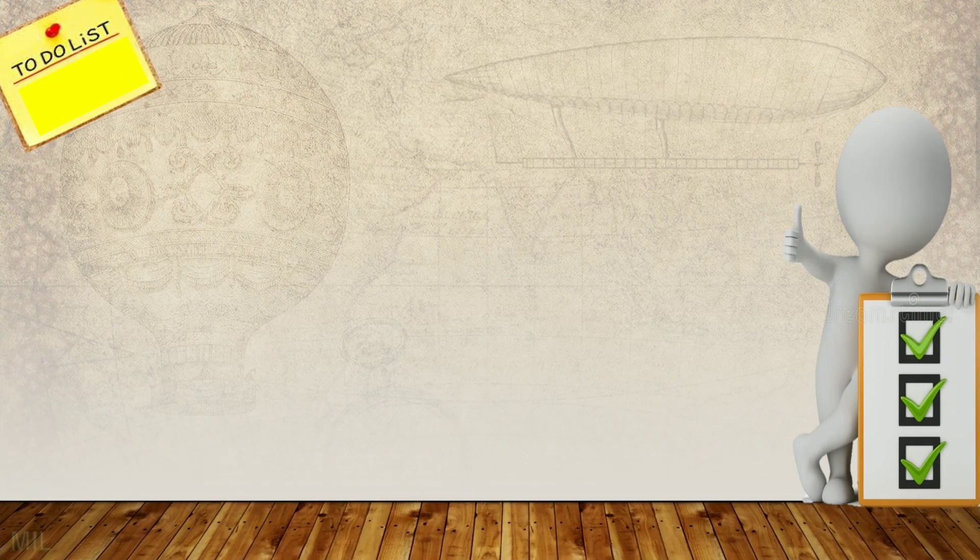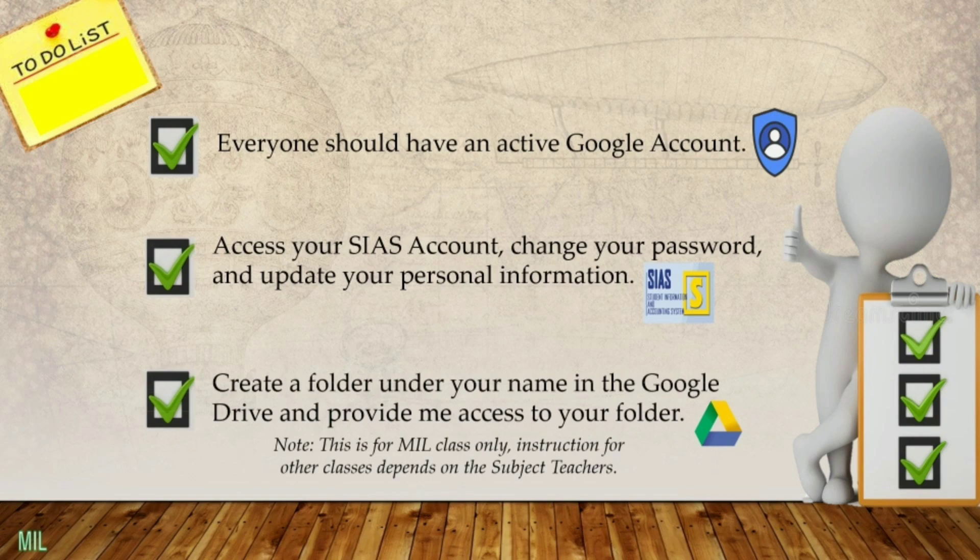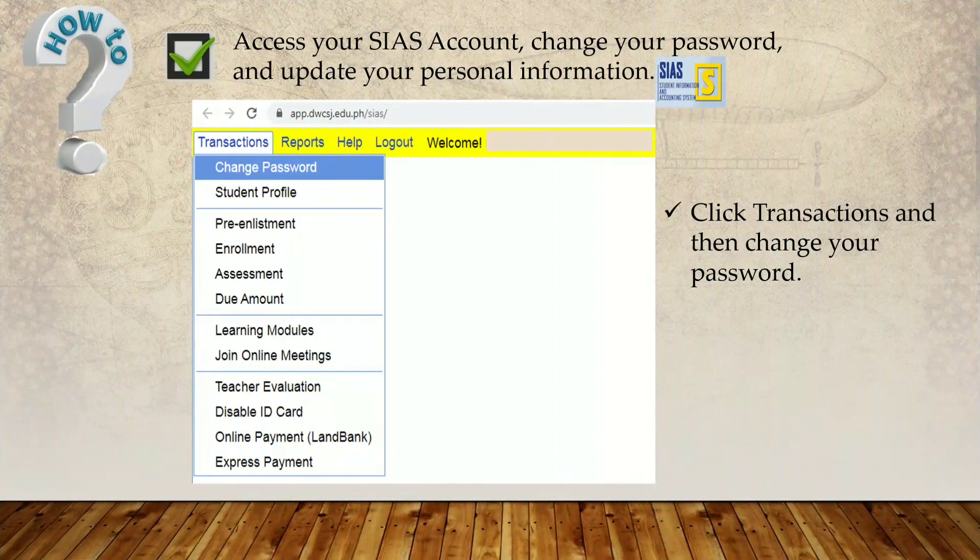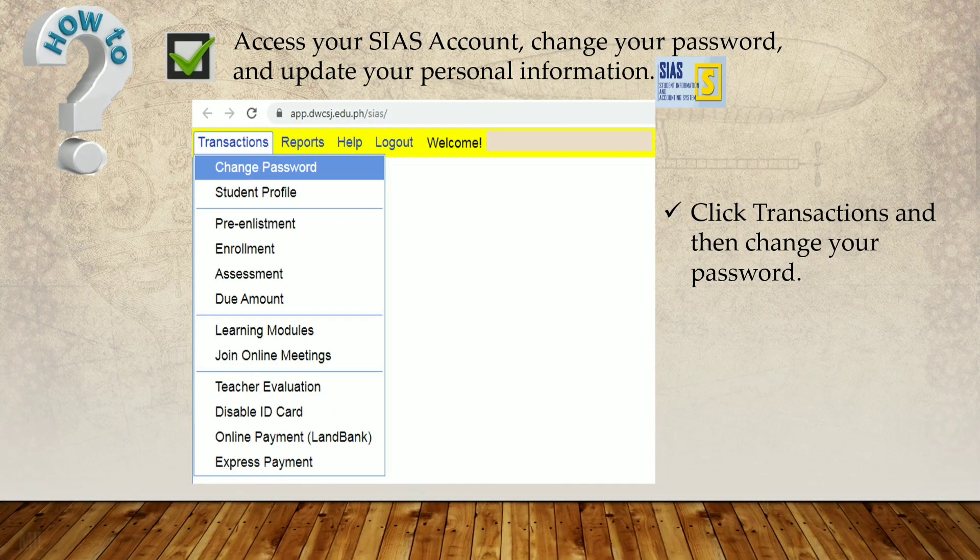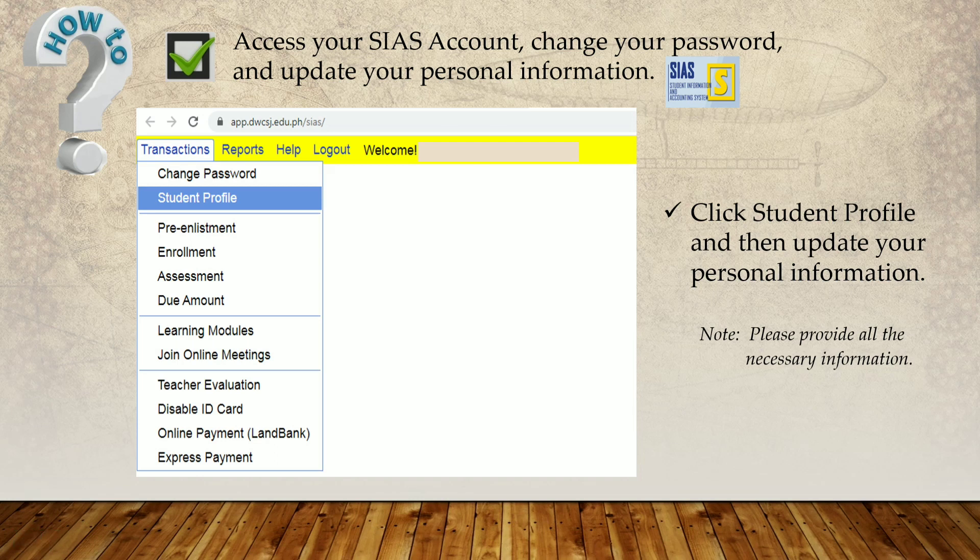And here are the following important things to do before we formally start our online class. First, everyone should have an active Google account. Second, access your CS account, change your password and update your personal information. Third, create a folder under your name in the Google Drive and provide me access to your folder. If you already login in your account, just click Transactions and then change your password. And by clicking Student Profile, you need to update your personal information.